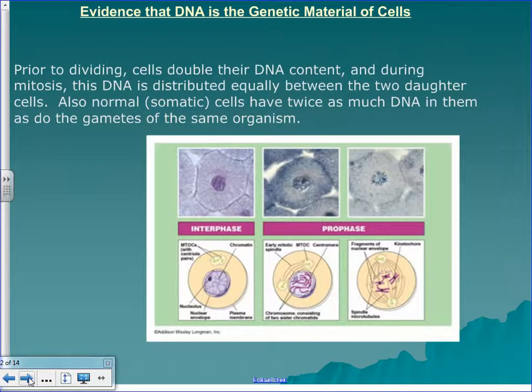Prior to dividing, cells double their DNA. Every one of your cells in your body is supposed to have two copies of everything. So when a cell divides, the first thing it needs to do is make four copies of everything so that each of the daughter cells will have two copies.